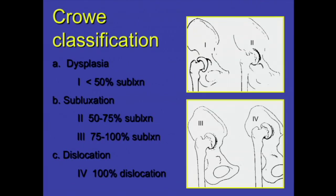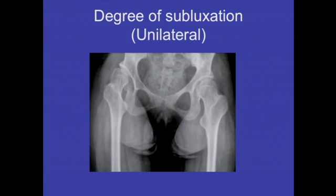Crow classification is a useful classification in this procedure. Crow type 1 has less than 50% subluxation, type 2 is 50–75%, type 3 is 75–100%, and type 4 is 100% dislocation. To decide percentages, draw the inter-teardrop reference line, measure the distance from the medial side of the head-neck junction to this line, and compare with the vertical diameter of the opposite head.